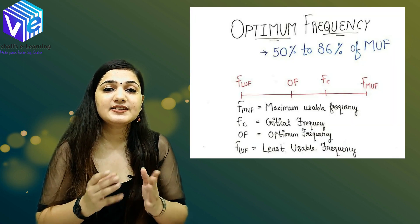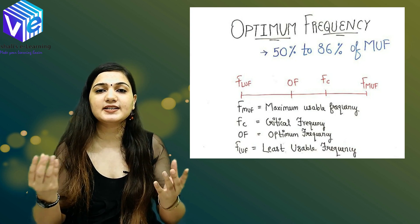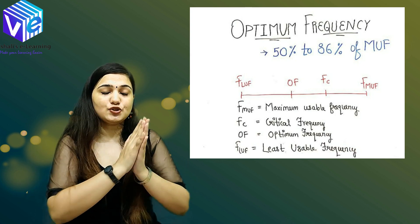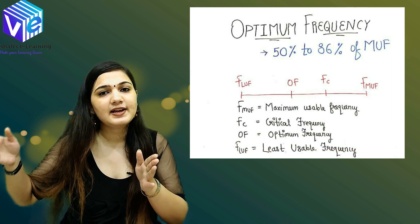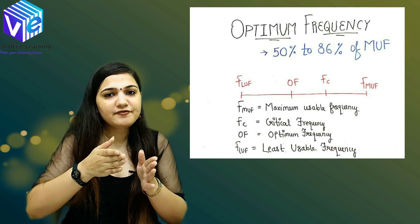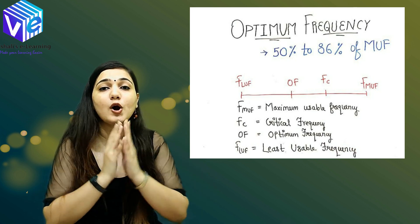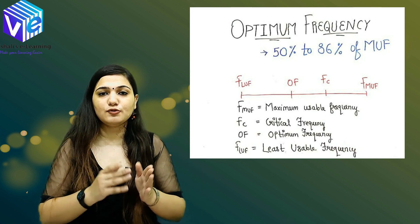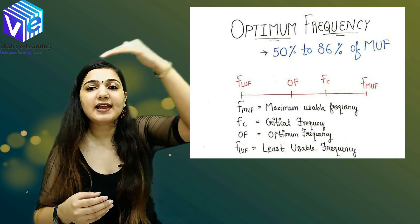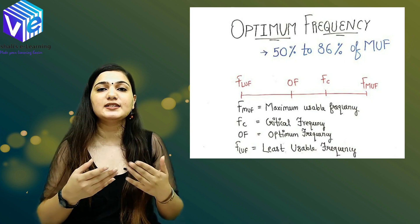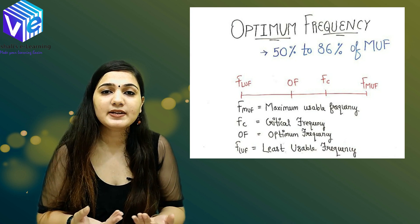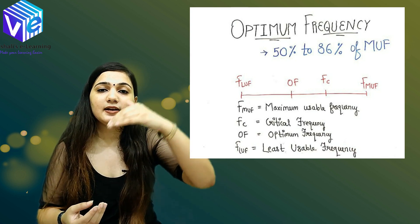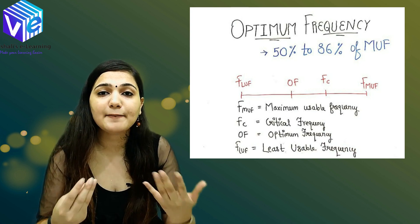The next term is optimum frequency, which is generally 40 to 85 percent of the maximum usable frequency. If we plot them in order from highest to lowest: FMUF, then Fc, then optimum frequency, then FLUF — the least usable frequency. If the frequency of the wave is so low that it does not even reach the ionosphere, it will not get reflected back and will be absorbed by the earth.